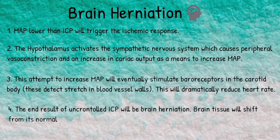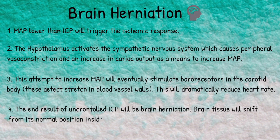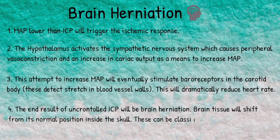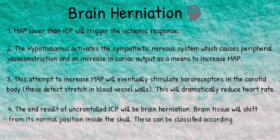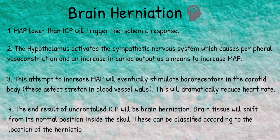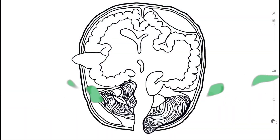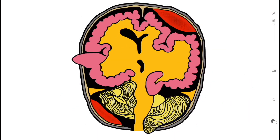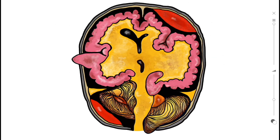The end result of uncontrolled intracranial pressure will be brain herniation, within which brain tissue will shift from its normal position inside the skull. These can be classified according to the location of the herniation. Here we have a brain showing the six different types of herniation, with a variety of pathologies present on the image that can lead to this.